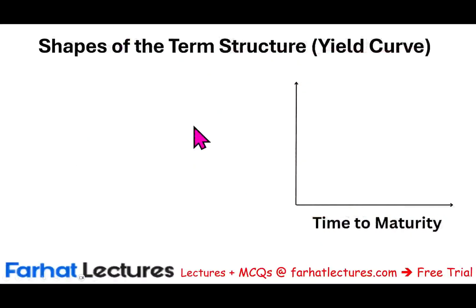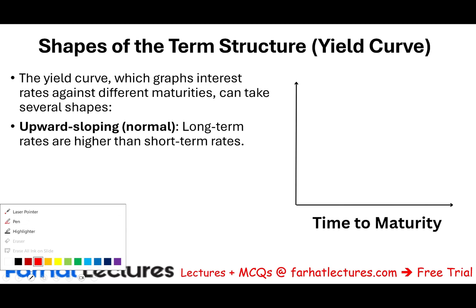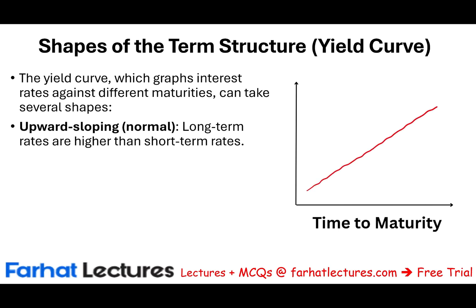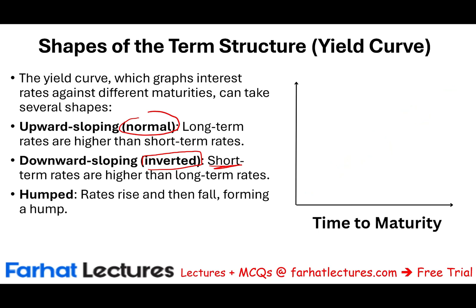What shapes can the term structure or yield curve take? It can take three forms. First, an upward sloping curve — this is called the normal curve. Second, a downward sloping curve — this is called inverted, and it occurs when short-term rates are higher than long-term rates. Third, it could be humped, where rates rise and then fall, forming a hump.